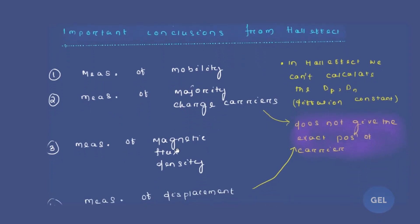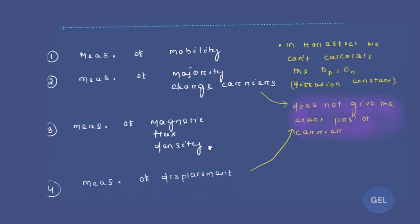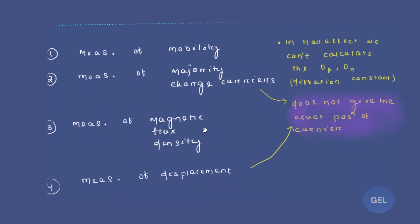Measurement of magnetic flux density is also possible because the magnetic flux density involves in terms of transverse magnetic field. Measurement of displacement is also possible.